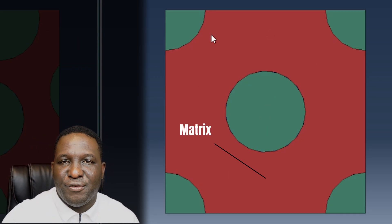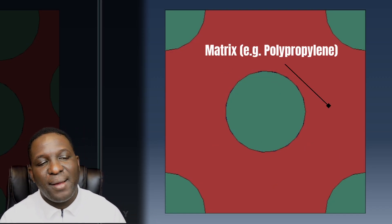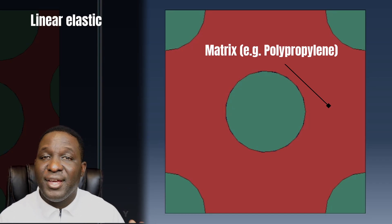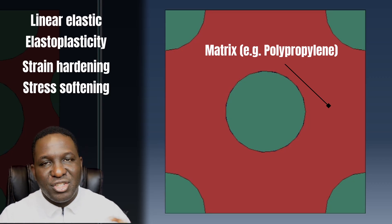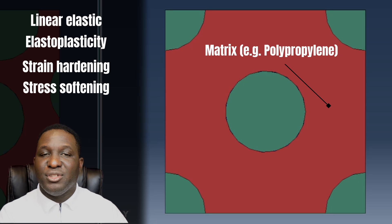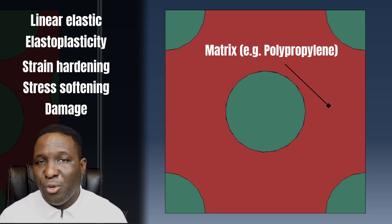The same applies for the matrix. In this instance, the matrix is probably a polypropylene material. How do you capture the behavior of polypropylene? Do you use a simple linear elastic behavior, elastoplastic behavior with strain hardening, strain softening? It depends on the complexity of the problem. Sometimes you model without considering damage — but will damage be important? This whole discussion of material model choice is key when modeling within a representative volume element.